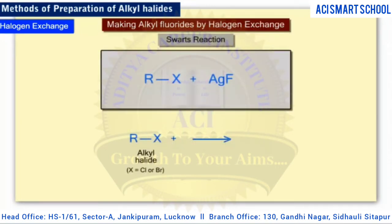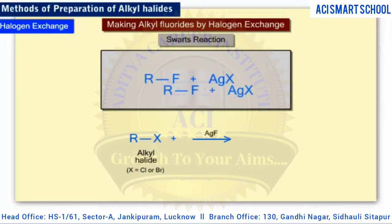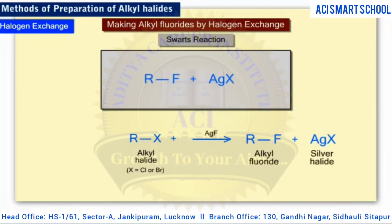Halogen exchange also provides a synthetic route to alkyl fluorides, which are difficult to make by other methods. In the Swarts reaction, an alkyl chloride or alkyl bromide is heated in the presence of a metallic fluoride, such as silver fluoride, mercurous fluoride, cobalt fluoride, or antimony trifluoride. As shown in the general equation, the fluoride ion is able to replace the other halogen atom, making an alkyl fluoride.